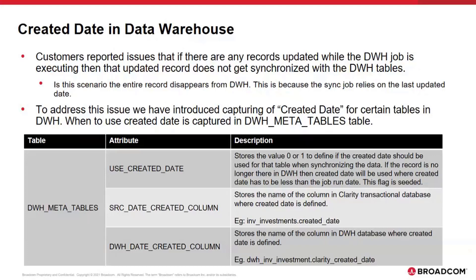There are three specific columns that have been added in the DWH meta tables. The first one is 'use created date', which has a value of 0 or 1, and will be seeded as part of the update to 15.9.3. The second column is the 'source date created column', which defines the Clarity transactional database table where the created date should be used from. The last is the 'DWH data created column', which stores the column in the data warehouse table indicating where to read that information from.